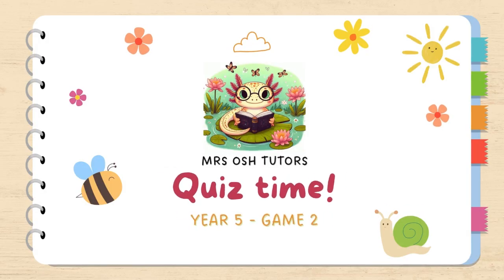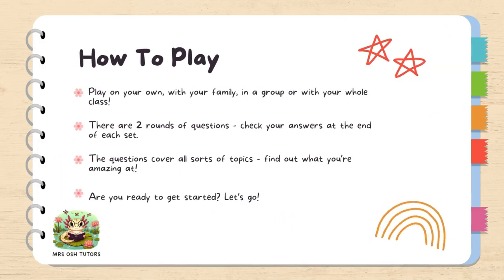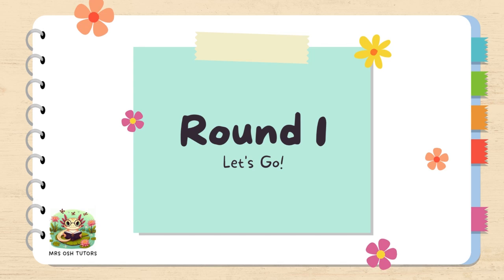This is your second quiz for Year 5 that you could play with friends, family, classmates or by yourself. If you haven't seen the first game, you can go back into YouTube, search for Mrs. Oss Tutors and find it there. Grab yourself a pen or a pencil. After each round, I will go through all the answers. There are two rounds, eight questions in each. Off we go.